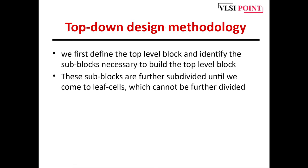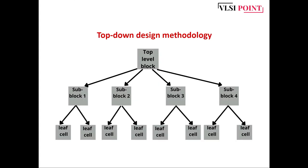In the top-down design method, we first define the top-level block and then identify the sub-blocks necessary to build it. These sub-blocks are further subdivided until we come to the leaf cell, which cannot be further divided. As you can see in this figure, we have the top-level block, which is divided into sub-blocks, and again these sub-blocks are divided into leaf cells. The leaf cell is the smallest possible block which cannot be further divided. The flow is from top to bottom — that's why this methodology is called the top-down design methodology.